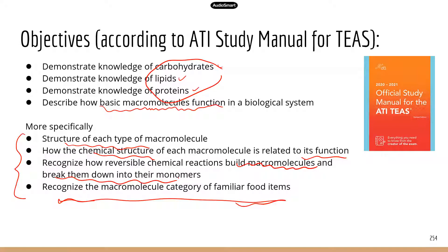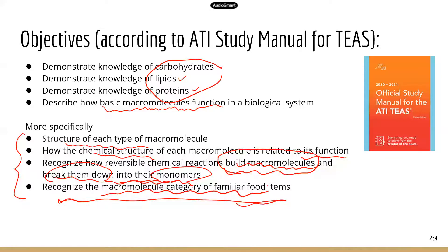Those two kinds of chemical reactions are reversible — one builds from small to large, that's the reaction you use to build big macromolecules. The other type breaks big macromolecules down to smaller molecules, which are the monomers. Lastly, you need to be able to recognize the specific macromolecules in some familiar food items. For example, they may ask you which of the following foods is rich in lipids or carbohydrates.